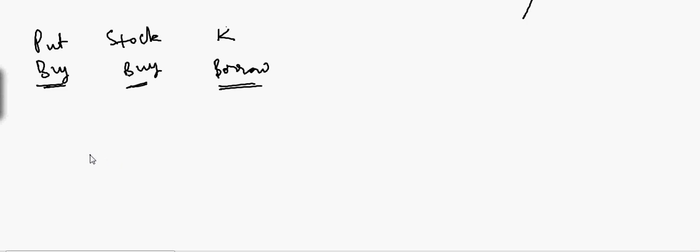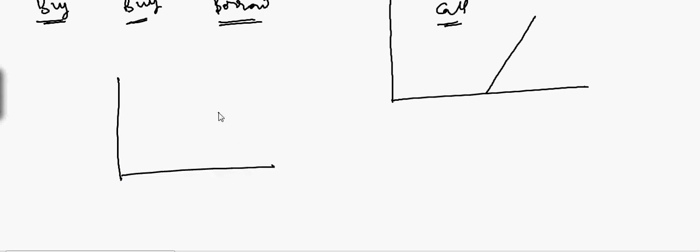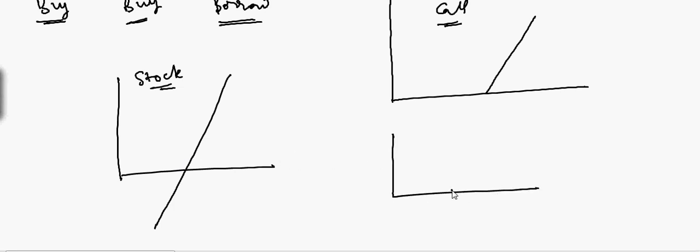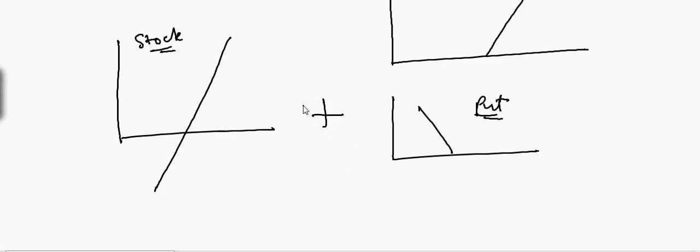Let's take an example. This is your call option — you have to mimic this function. So what you do is buy a stock; your stock payoff looks like this. Then if you buy a put on it, you see what the put looks like. If you combine both of them together, the gain from one is offset by the loss from the other, and you get something that looks like a call.